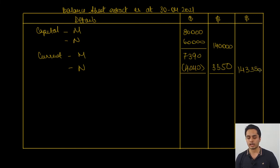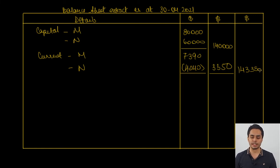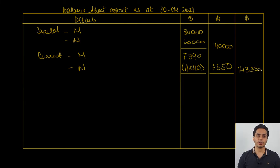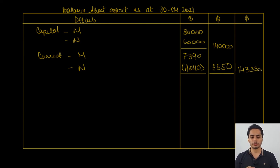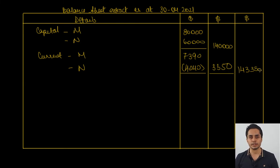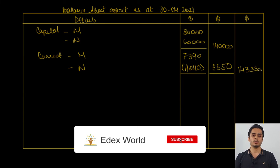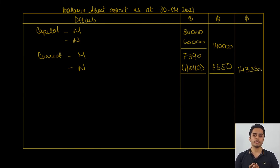We can continue preparing non-current liabilities and current liabilities to finish the balance sheet, but we won't do that here as this is just the balance sheet extract. I hope all the concepts related to partnership financial statements are clear — the preparation of the P&L appropriation account, the current account, and the presentation of partner's balances in the balance sheet. If you enjoyed the video, please like and share it with your friends, subscribe to this channel, and I'll see you soon in a new video.